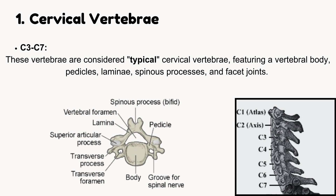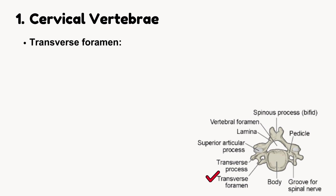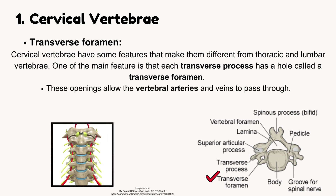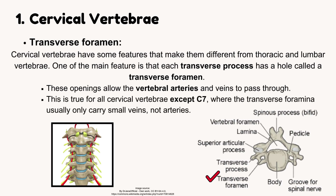Cervical vertebrae C3 to C7. These vertebrae are considered typical cervical vertebrae, featuring a vertebral body, pedicles, laminae, spinous processes, and facet joints. One main feature is that each transverse process has a hole called a transverse foramen. These openings allow the vertebral arteries and veins to pass through. This is true for all cervical vertebrae except C7, where the transverse foramina usually only carry small veins, not arteries.